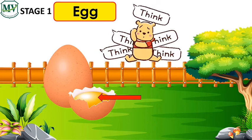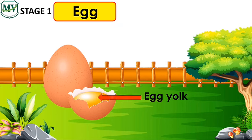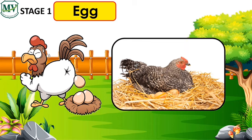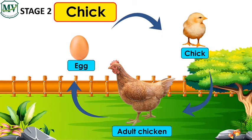How about the round yellow thing inside the egg? It is the egg yolk. The egg yolk provides a developing chick with nutrients so that it can grow. The egg needs to be kept warm for the chick to hatch, and that is why the hen keeps the eggs warm by sitting on them. A female chicken can lay an egg almost every day.